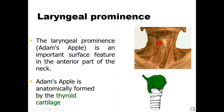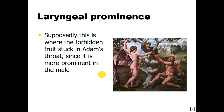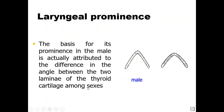First, we have what is called the laryngeal prominence, which is due to the fusion of two laminae of the thyroid cartilage. The laryngeal prominence is sometimes called the Adam's apple, mainly in males, so it is more prominent in males. This name is thought to come from the story of the fruit apple stuck in Adam's throat as mentioned in mythology.